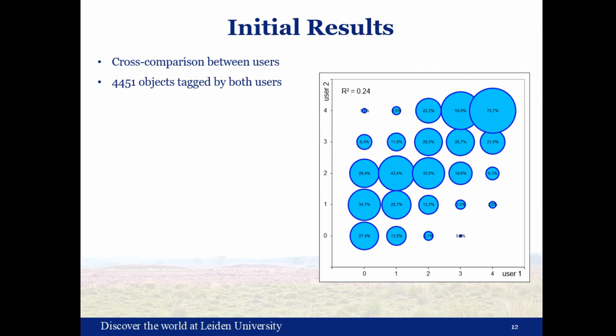We can also do a cross comparison between users. Again, you would expect, if everything were ideal, 100% correspondence along the diagonal. For the highest class four — definitive — 70.7% of the features tagged in this class by user one are also tagged this way by user two. User two tends towards higher values. In the end, when we put together the results, we will of course have to correct for all those differences.